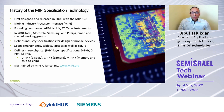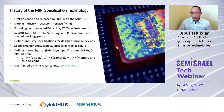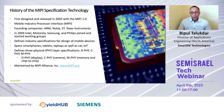MIPI defines three new physical layer specifications to allow real-world connections. They are D-PHY for the display, C-PHY for the cameras, and M-PHY for the memory and chip-to-chip interfaces.